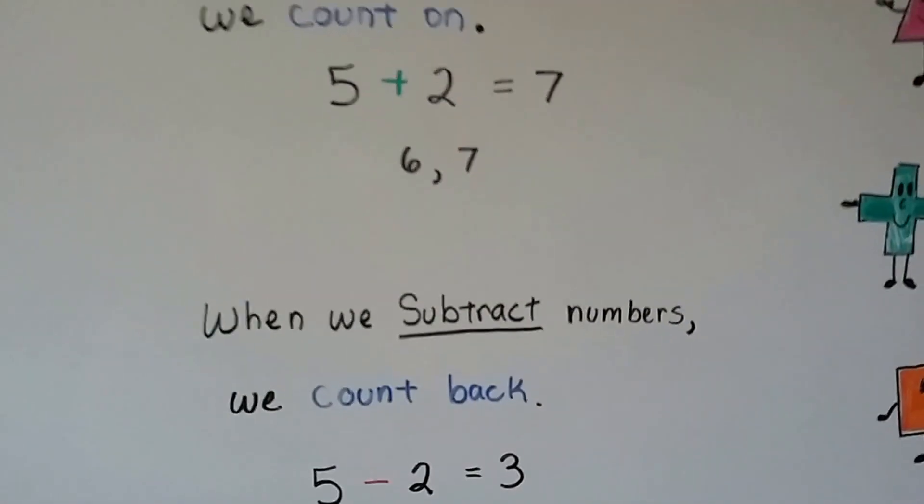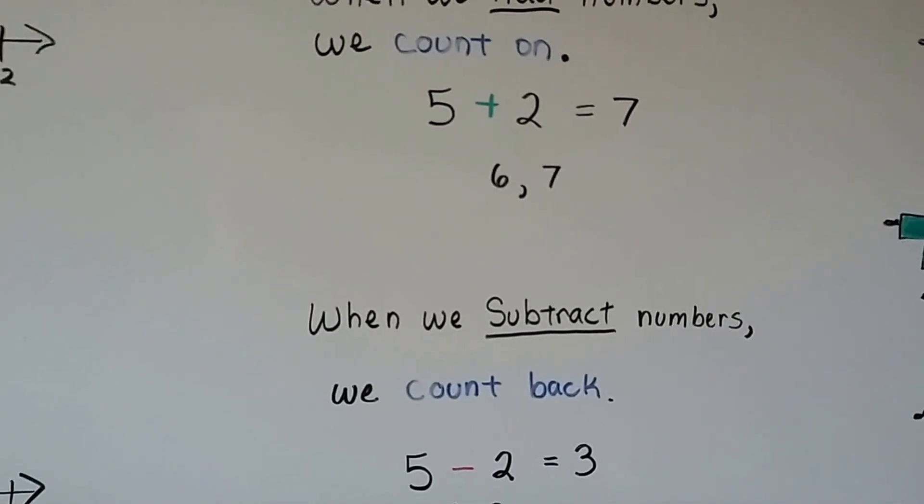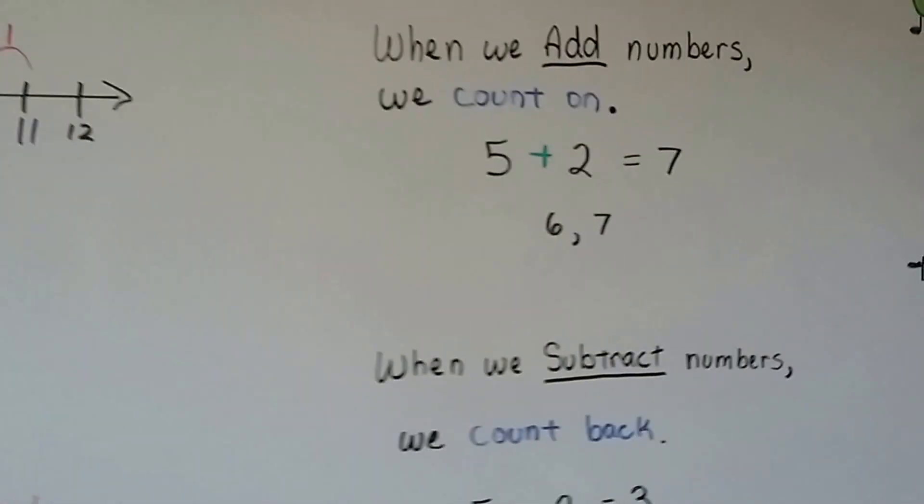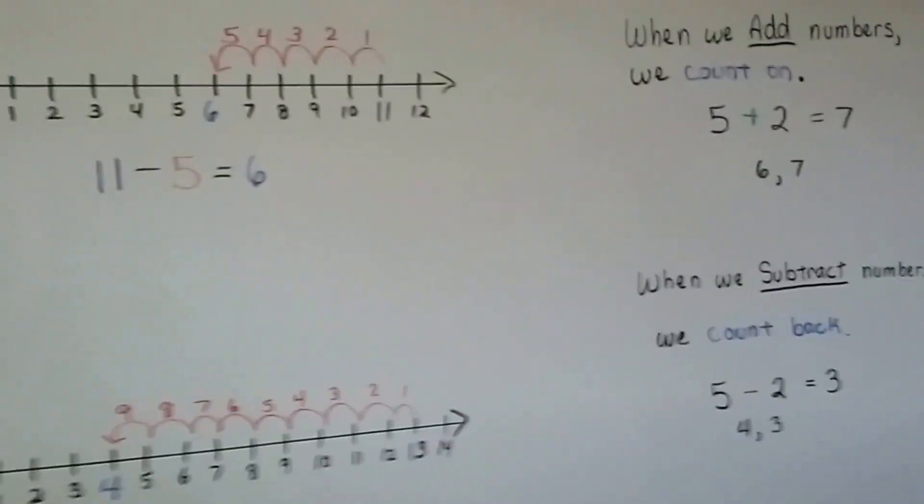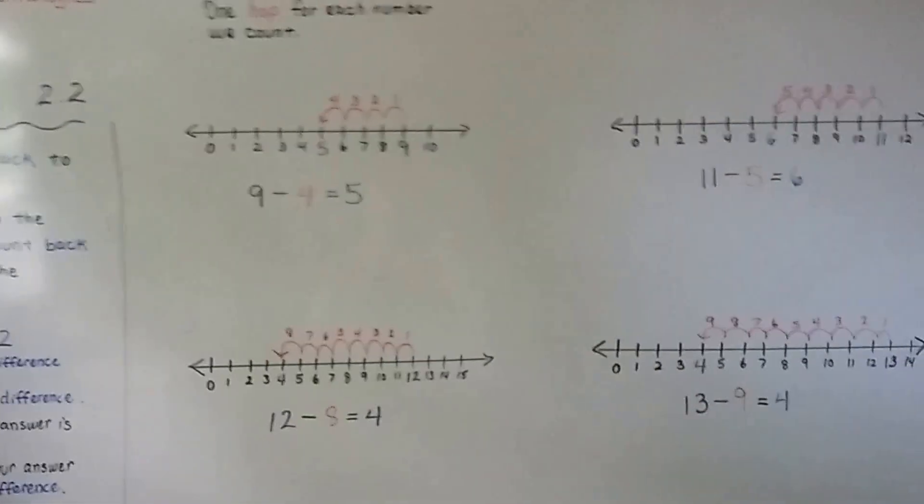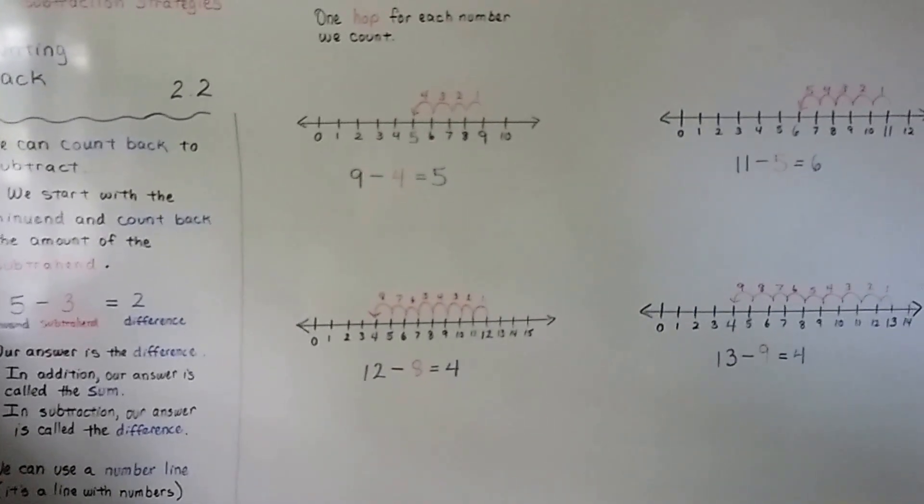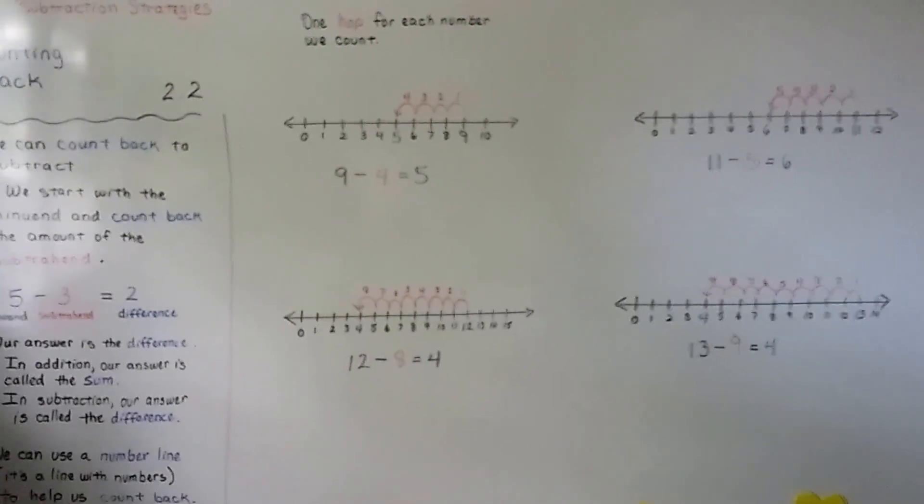So in addition, we count on, and in subtraction, we count back. So that's counting back, and that's using a number line, and now you know what a minuend is and a subtrahend. The minuend is the first number. The subtrahend is the amount we're taking away, and the answer's the difference.